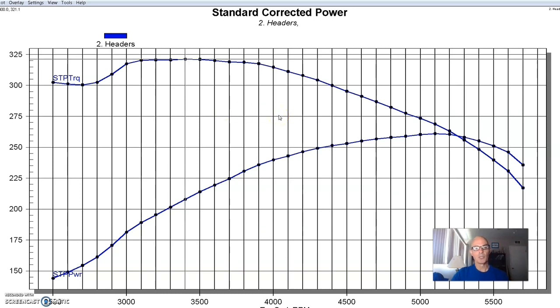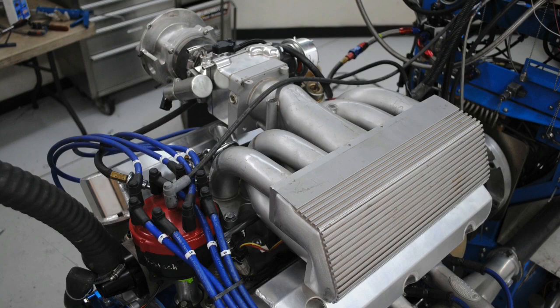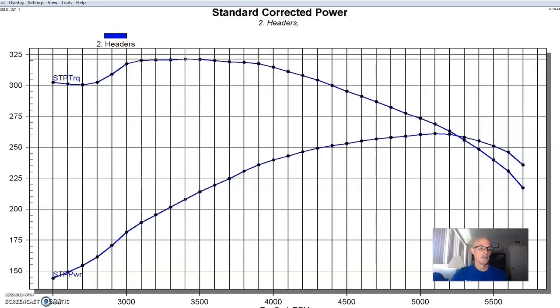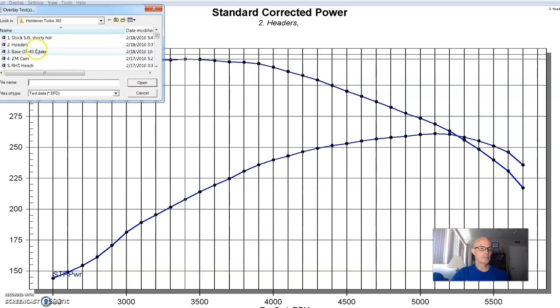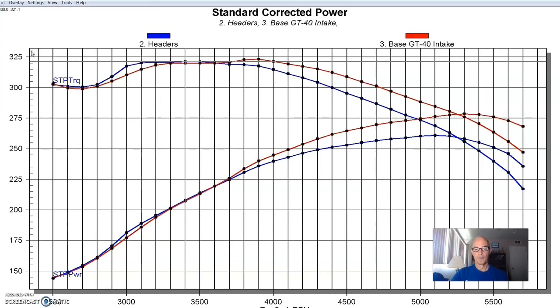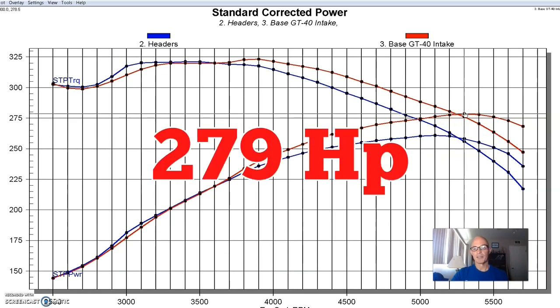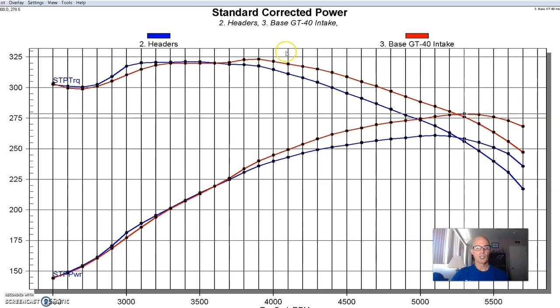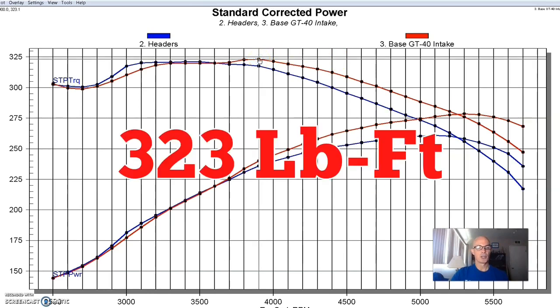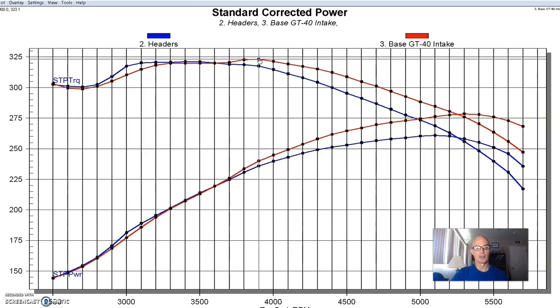Here's what happened when we installed the GT40 upper and lower intake manifold. We did get a gain, as expected. Lost a little, just a tiny bit down here at 3,000 RPM, but the power output jumped from 261 horsepower up to 279 horsepower. The peak torque changed very little, although it did shift it out slightly, 323 foot-pounds, but it happened out here at 3,900 RPM.